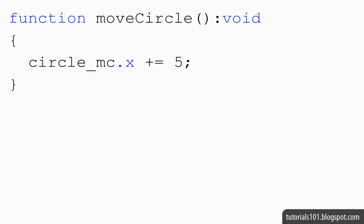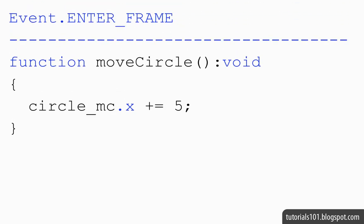This is where the EnterFrame event comes in. We know that the EnterFrame event gets dispatched numerous times depending on the Flash movie's frame rate. So what we can do is register this function to the EnterFrame event so that every time the event gets dispatched, the function is going to run. By using an EnterFrame event listener, we are going to be able to animate an object using code.